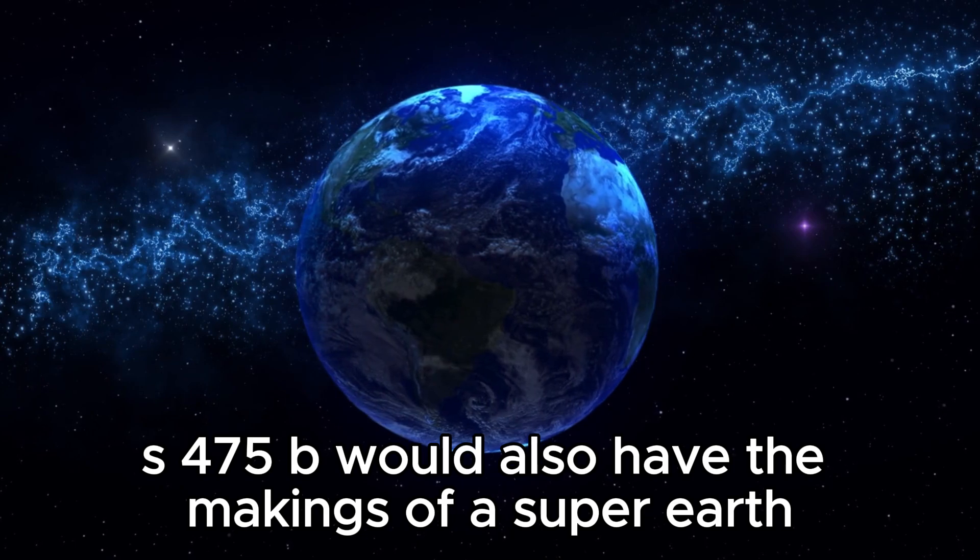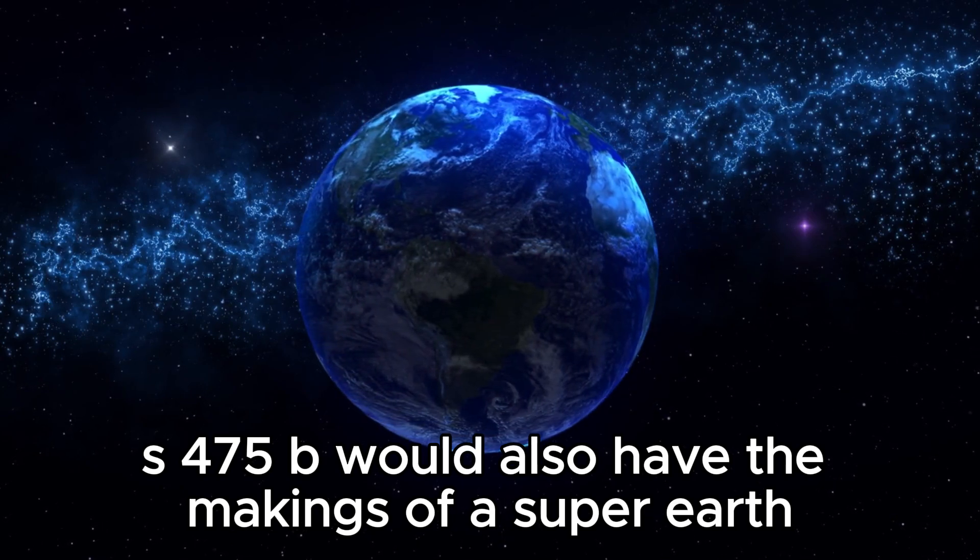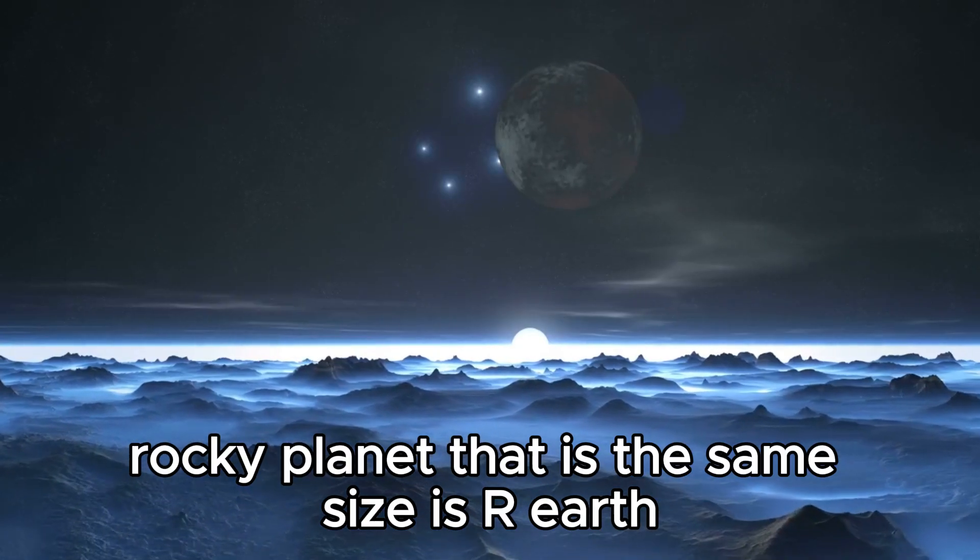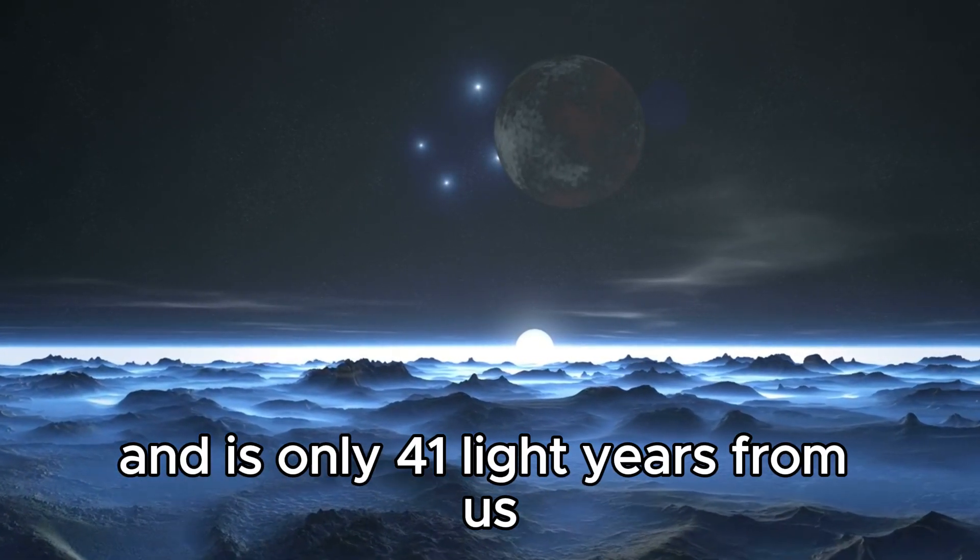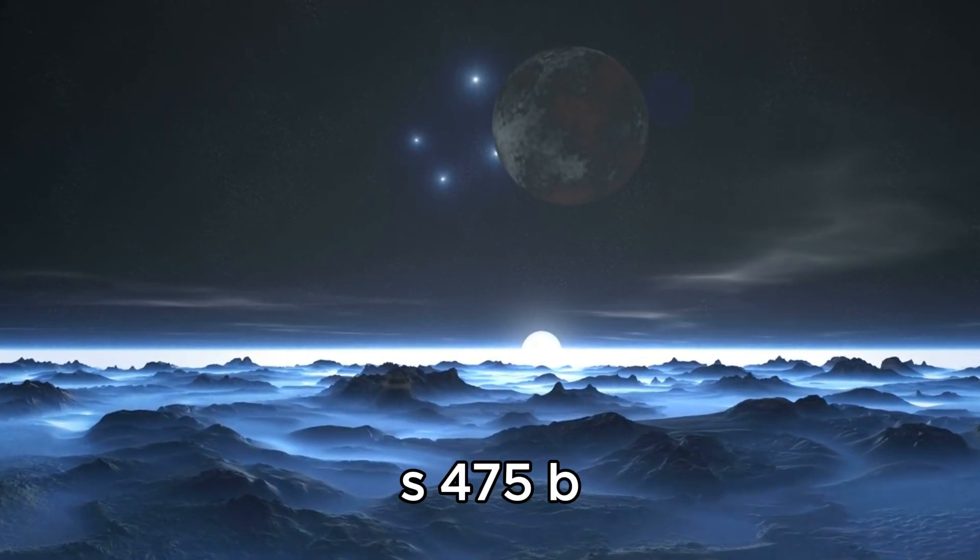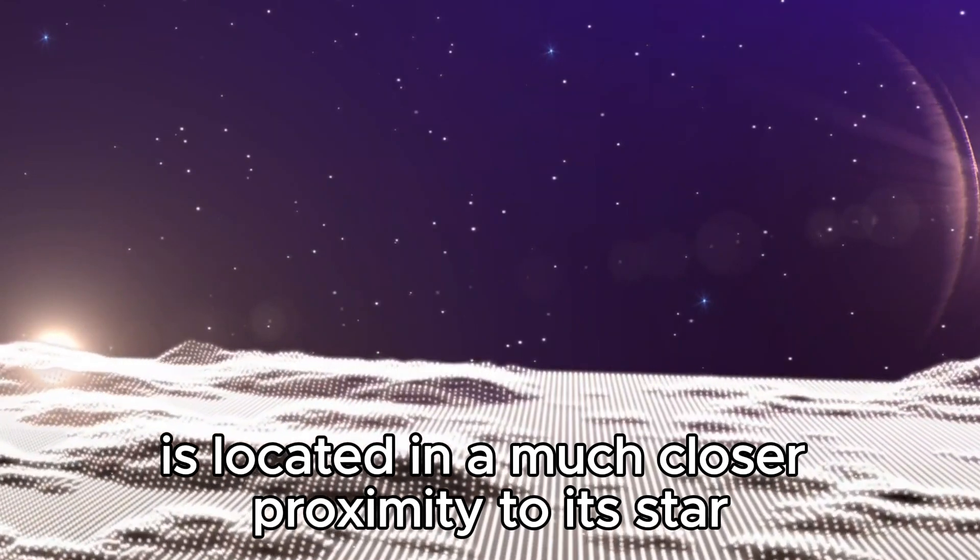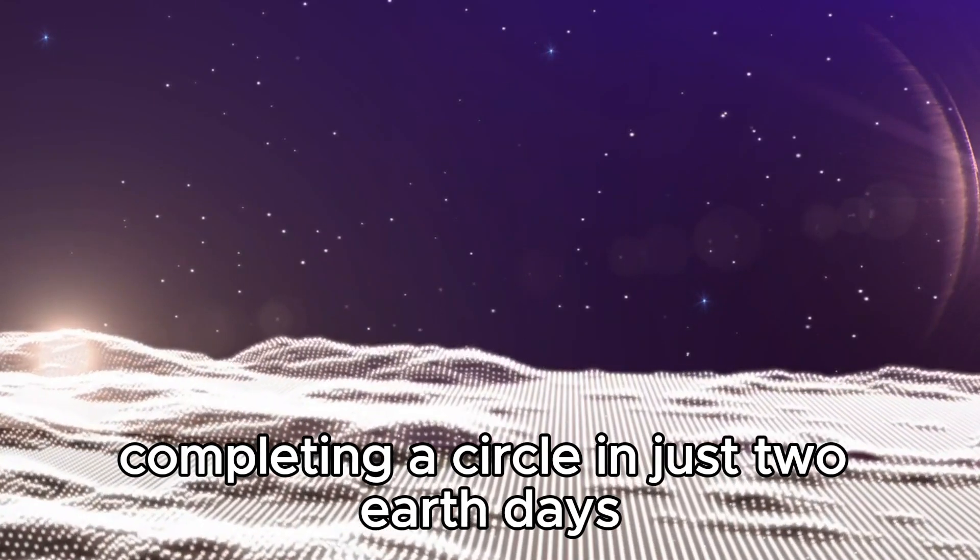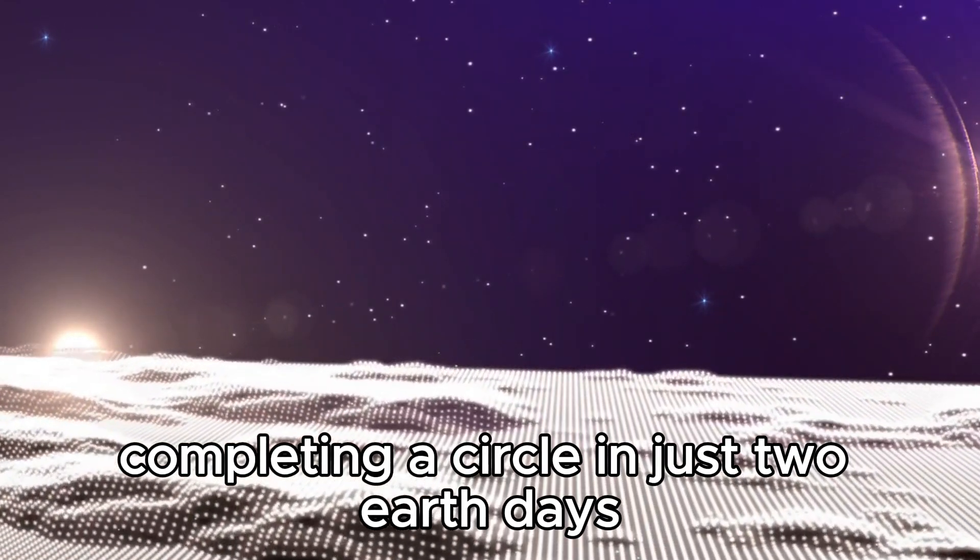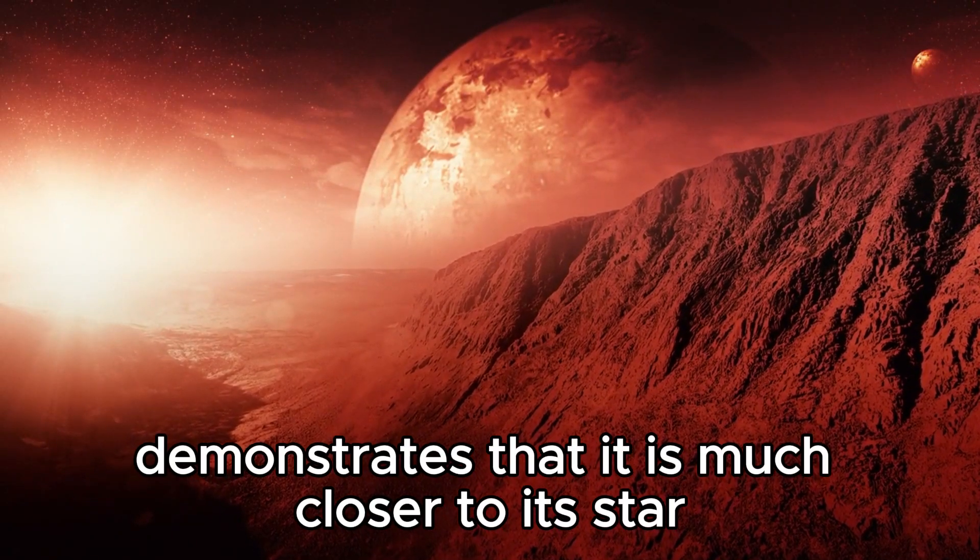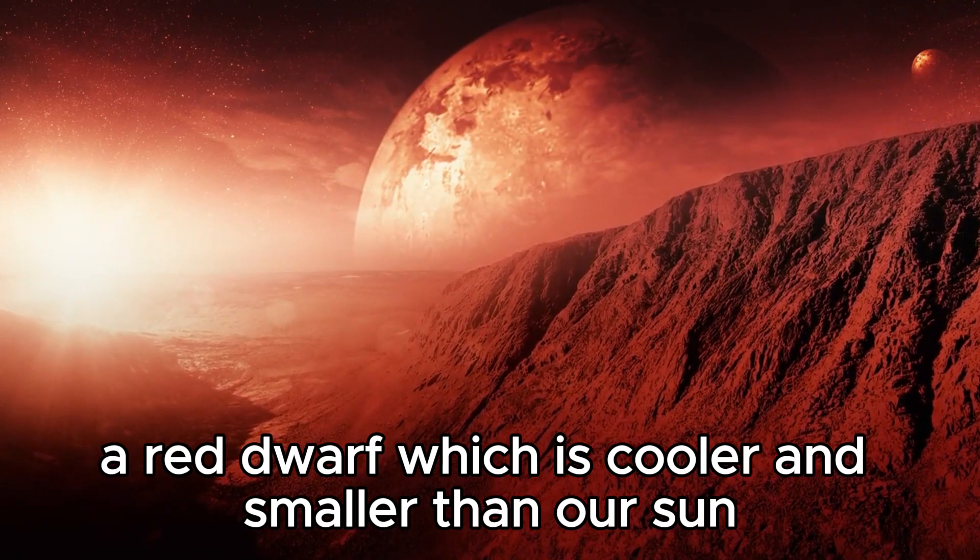LHS-475 b would also have the makings of a super-Earth. It's a small rocky planet that is the same size as our Earth and is only 41 light-years from us. Interestingly, LHS-475 b is located in a much closer proximity to its star than Earth is to the Sun, completing a circle in just two Earth days.